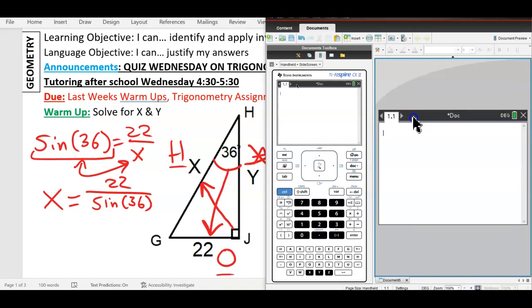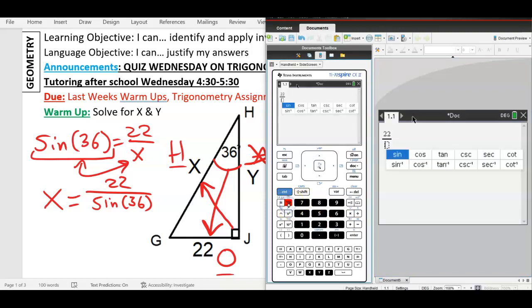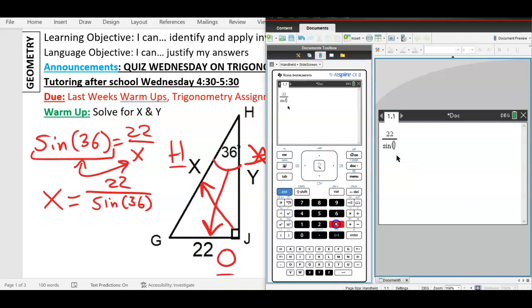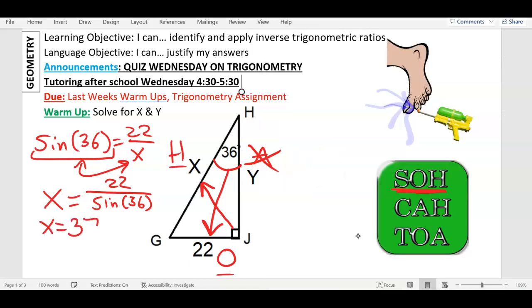Okay, so 22 divided by sine 36. If you hadn't been here or you forgot, here's how you do this. 22, control, divide. Trig is next to the number 7, right there in the trig button. Trig, we'll hit sine 36, and then I hit enter, and I'm going to round two decimal places to the right of the decimal. So I got 37.428. The 8 makes the 2 round up. So 37.43 is my X.